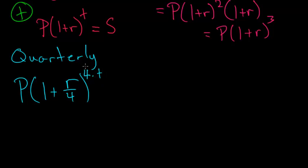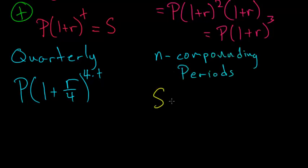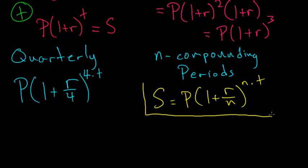So if I wanted to compound N times, let's say N compounding periods, then our formula, S, is equal to P times 1 plus R split into N parts to the N times T power. And this equation is the general formula for compound interest.